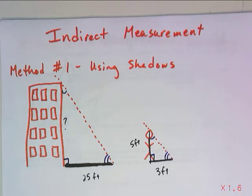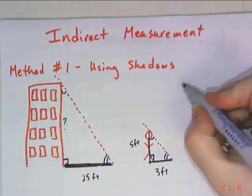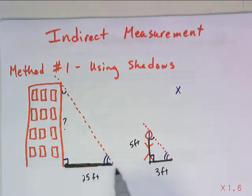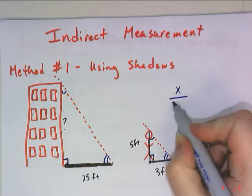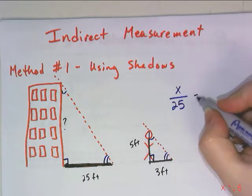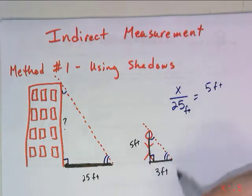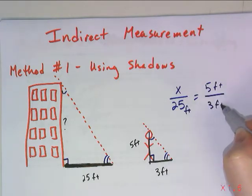Again, you can either find a scale factor or you can set up a proportion. In this case, there's not an obvious scale factor to use, so I'm going to make sure to set up a proportion. The height of my building, x, over the shadow of the building, 25, has to equal the height of my person, 5 feet, over the shadow of my person, 3 feet.